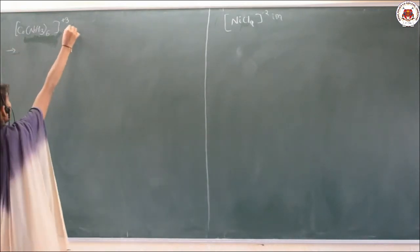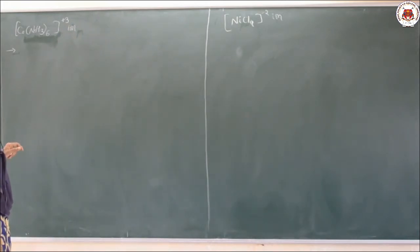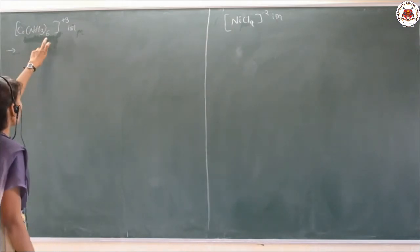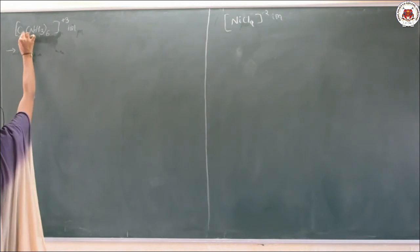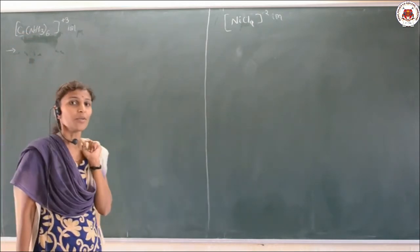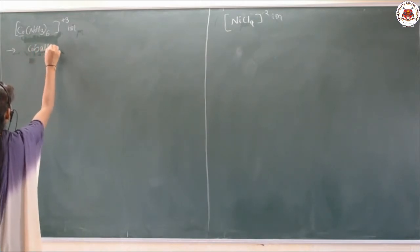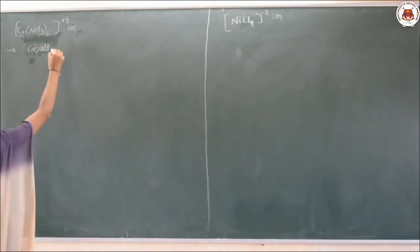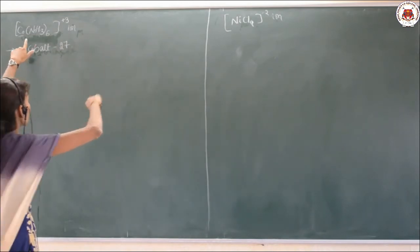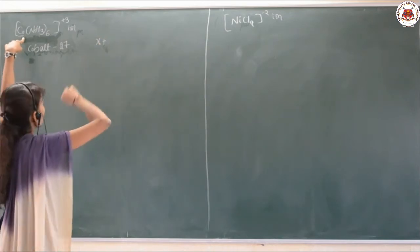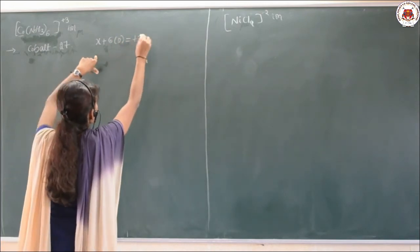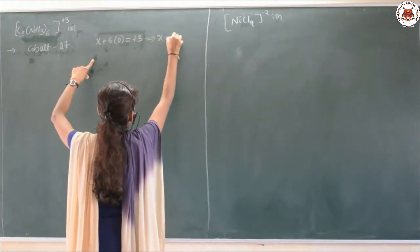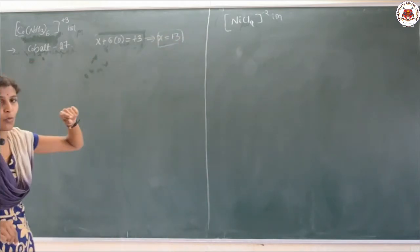Let us go for the first example: hexamine cobalt, [Co(NH₃)₆]³⁺. The name of this complex is hexamine cobalt(III) ion. First, look at the central metal atom, which is cobalt. Its atomic number is 27. To find the oxidation state: x + 6(0) = +3, so x = +3. Cobalt is in the Co³⁺ form.